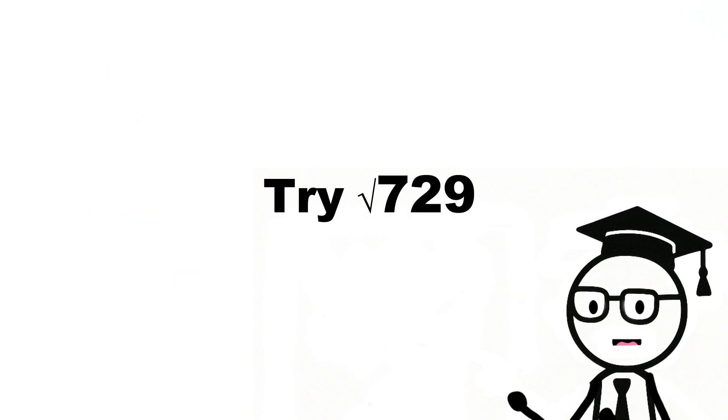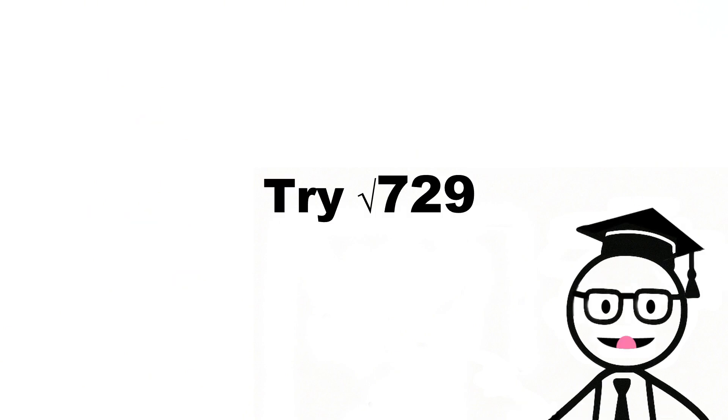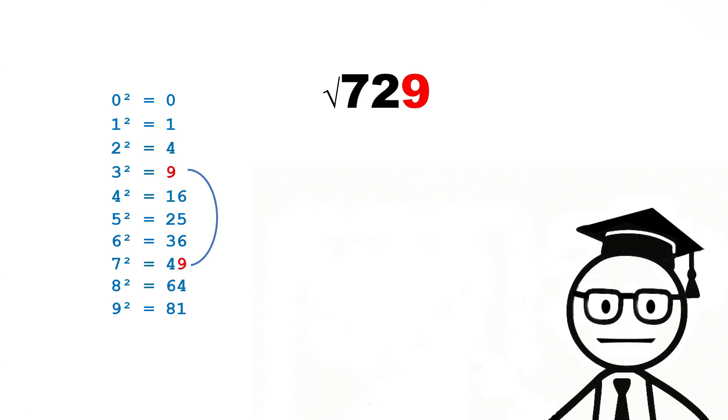Ready for a challenge? What's the square root of 729? That could come from either 3 squared equals 9, or 7 squared equals 49. So our answer might end in 3 or 7. Scratch out the last two digits.